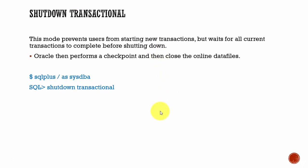Shutdown transactional — in this mode, the database will wait for all the current transactions to complete, but it doesn't allow the users to start any new transactions. The database will wait till all the current transactions complete, but it will not allow the users to start any new transactions. Once all the current transactions are complete, Oracle will perform a checkpoint and close all the online data files.